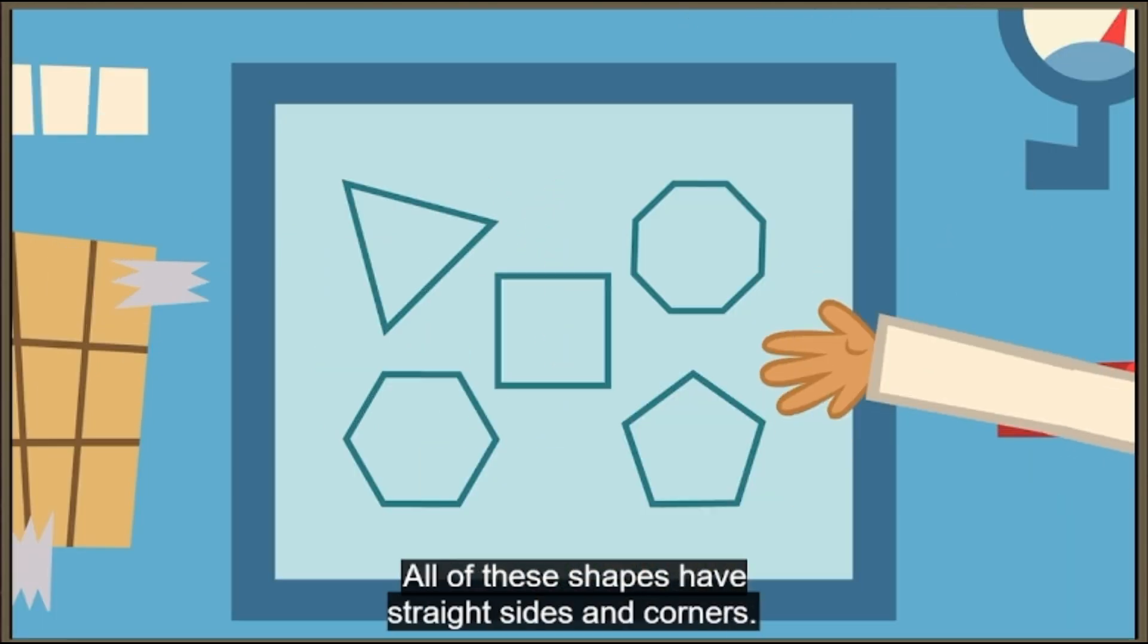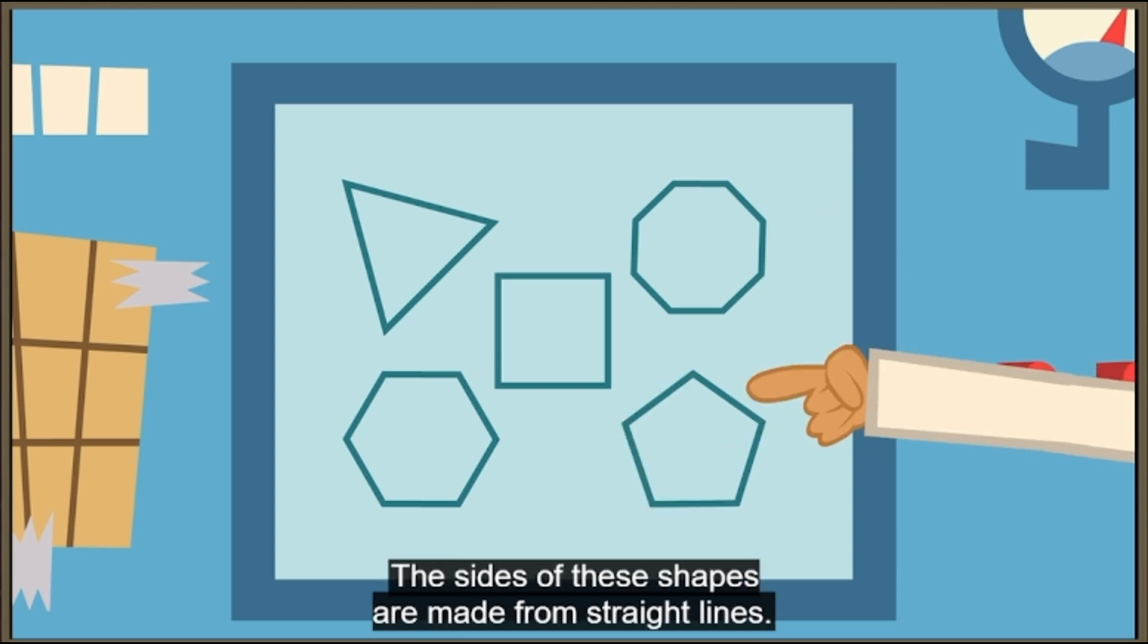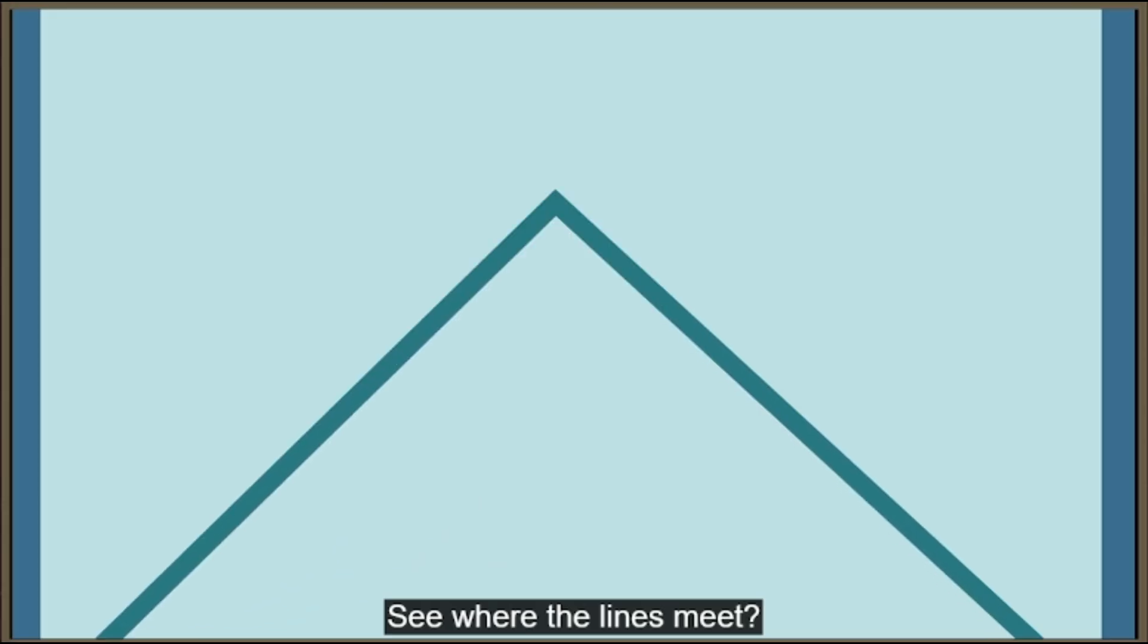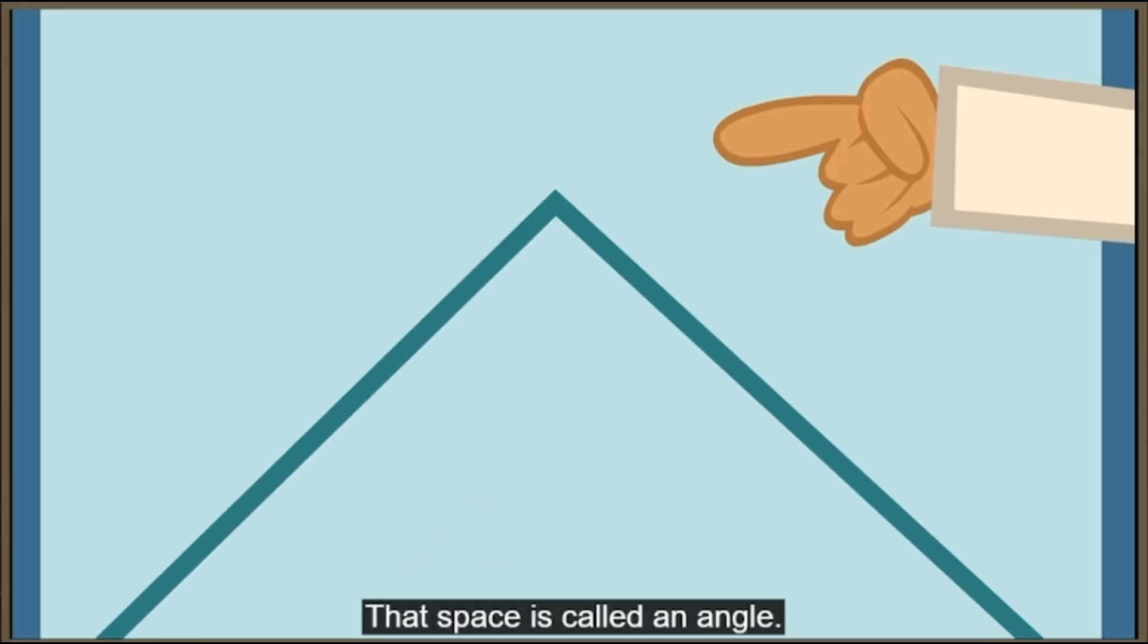All of these shapes have straight sides and corners. The sides of these shapes are made from straight lines. See where the lines meet? That space is called an angle.